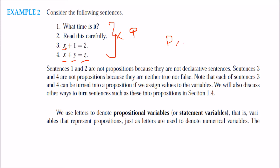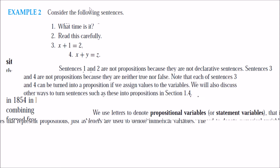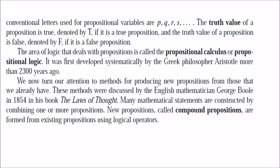We will use the variables p, q, r, s to represent propositional variables. And what is true or false? We call them truth values. If you have a proposition and it is true, then its truth value is true. If the truth value is false, it is a false proposition. The area of logic that deals with propositions is known as propositional calculus or propositional logic.